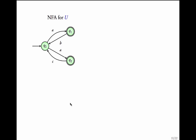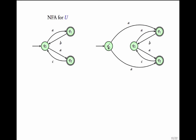One more example. This NFA accepts words like ABA, ACA, ABACA, and so on. Let us build the Büchi automaton for u^ω. Step 1: standardize the NFA by adding q0' and making it initial. There are two transitions out of q0: from q0' on A you go to q1, and from q0' on A you can also go to q2. This is the standardized NFA.